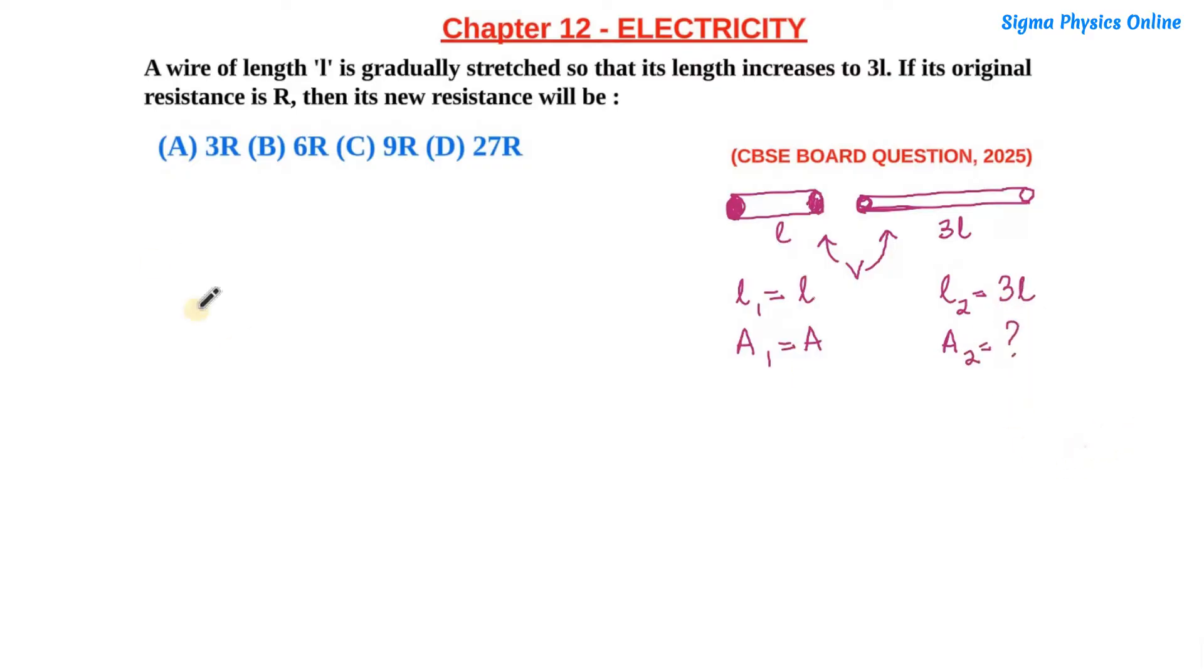Because it is the same wire which we are stretching, V₁ equals V₂. The volume of the first wire is area times length, so l × A equals the volume of the second wire. The volume of the second wire is also area times length, which is 3l × A₂, where A₂ is the unknown area of cross-section.